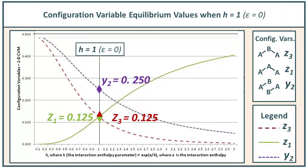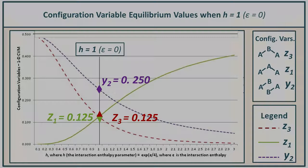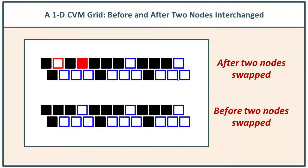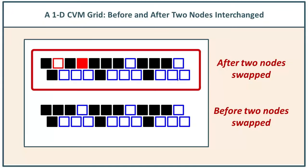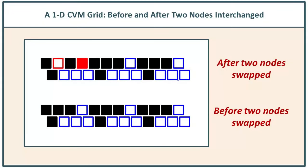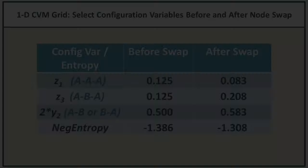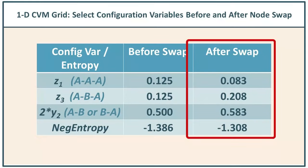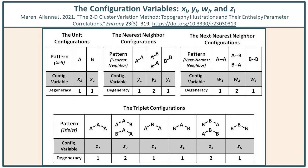Now let's see what happens when we swap out two nodes. We're going to use the example from the previous vid, continuing that theme. After we swap two nodes, we have new values for z1, z3, and y2. Before we dive into our interpretation, let's pull back and take a look at the analytic predicted values for the various configuration variables.